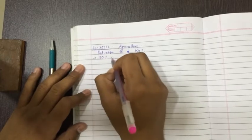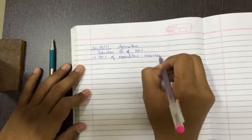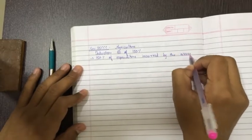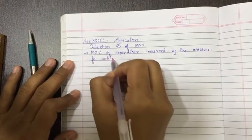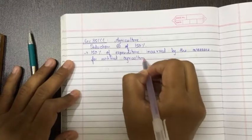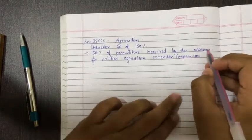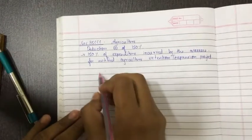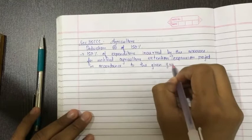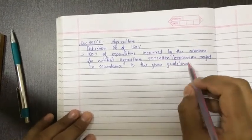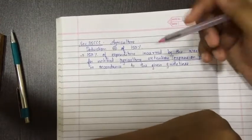150 percent of expenditure incurred by the SSE - wait, let me zoom - incurred by the SSE for notified agriculture extension/expansion project in accordance to the given guidelines. Guidelines are given by the act. These are all not important. Just remember agriculture extension/expansion project. If the SSE have made expense relating to agriculture extension expansion, then such expenses will not be allowed 100 percent but 150 percent.